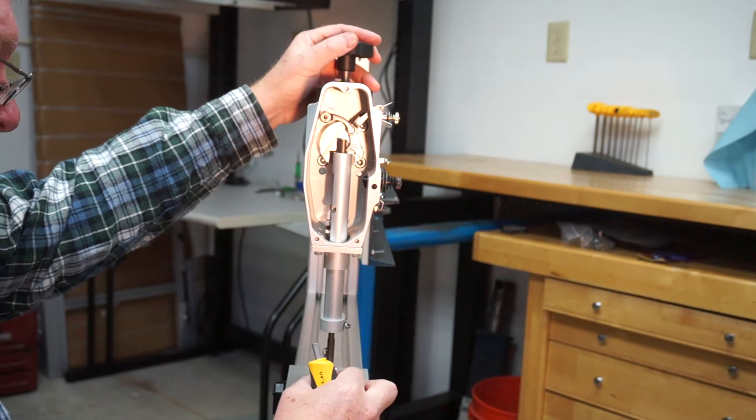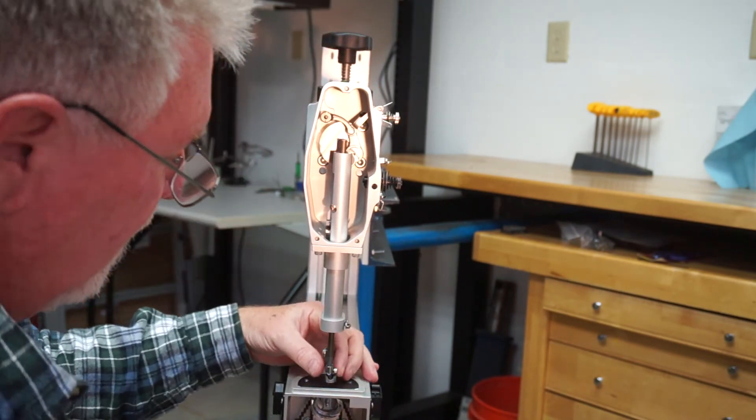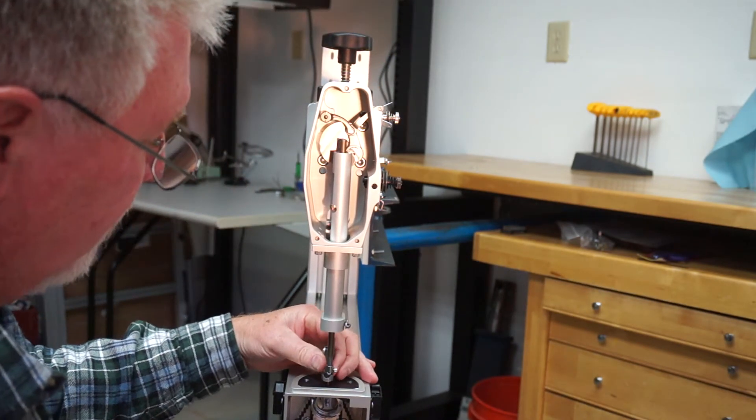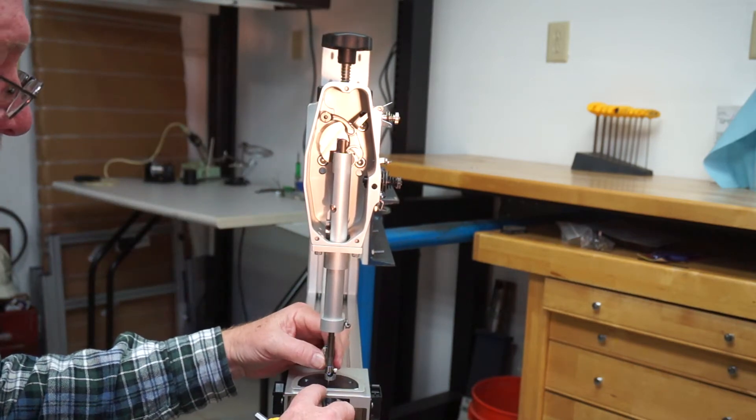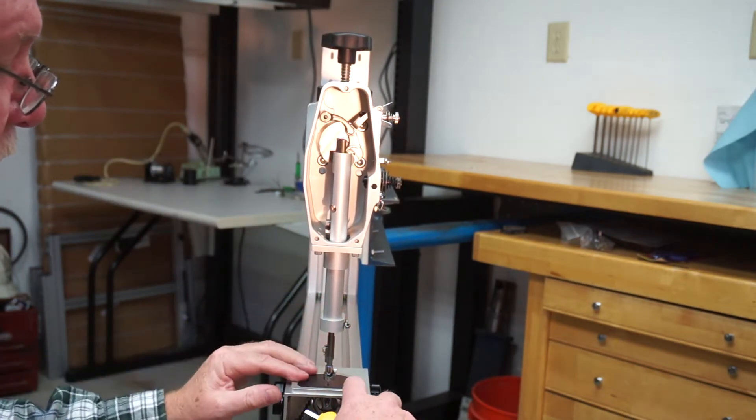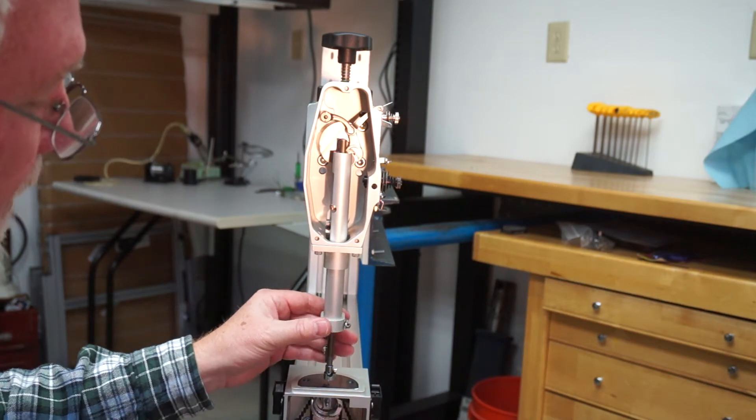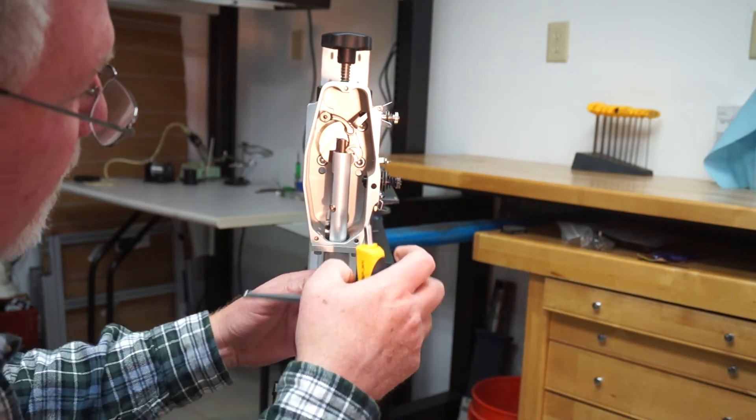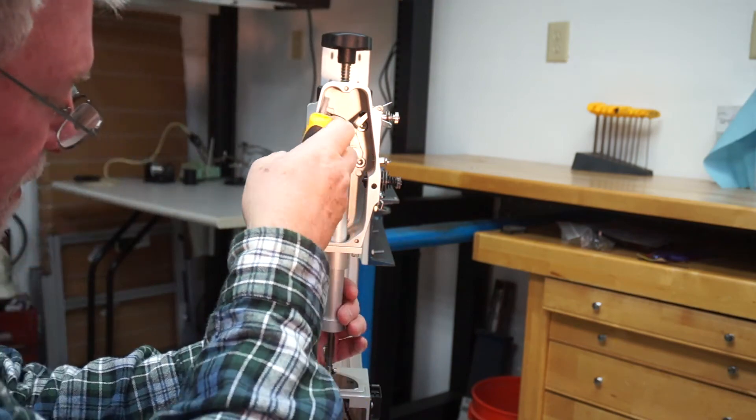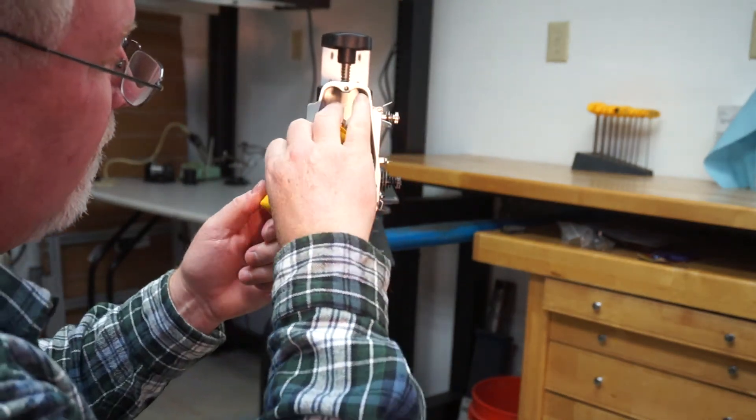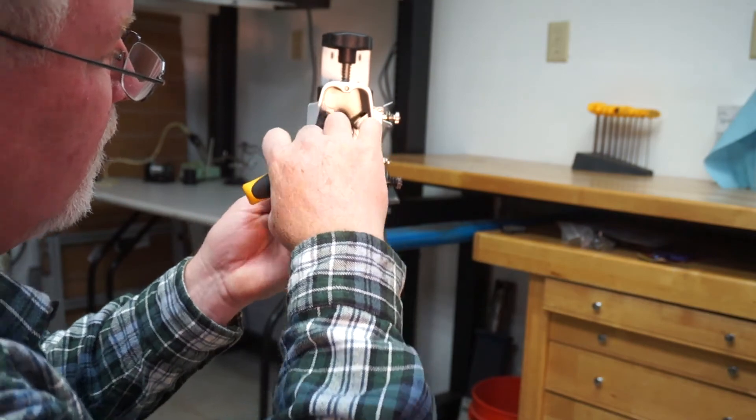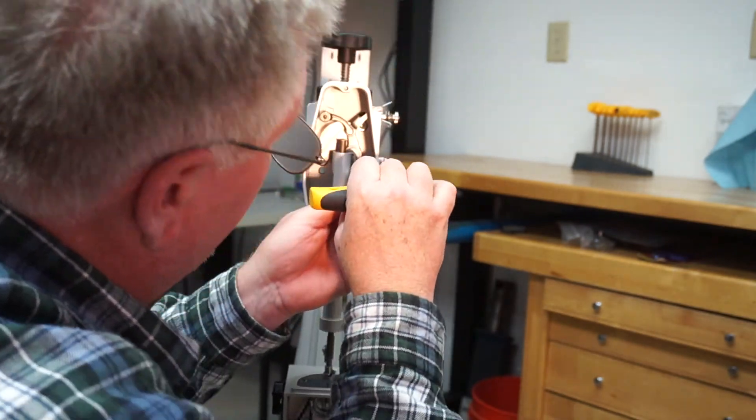Now that all screws are in, if you don't have your presser foot on there, you'll see more clearance. Make sure your needle is centered in the needle hole of the darning foot. It should pretty much go back into place, but you may have a slight bit of movement. So you want to make sure that you get it in the center, and then come back and tighten all your screws nice and tight.